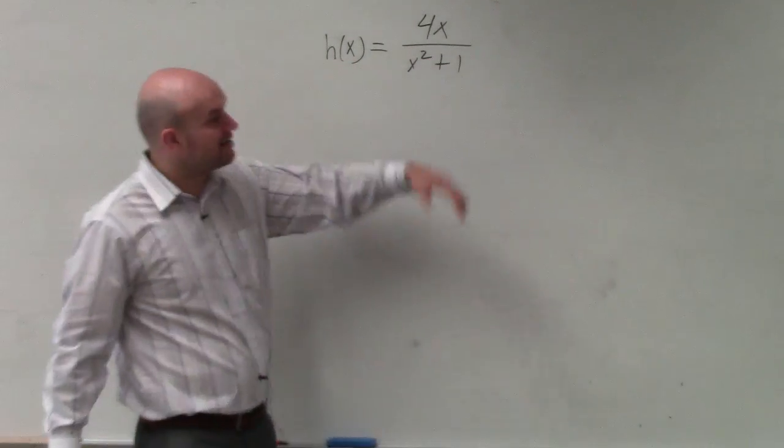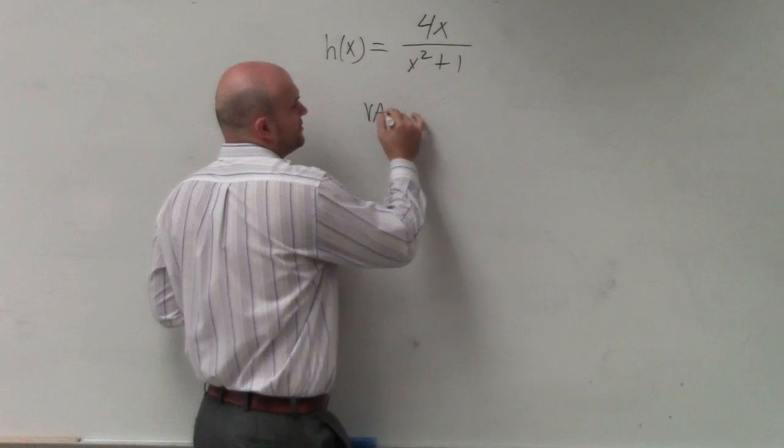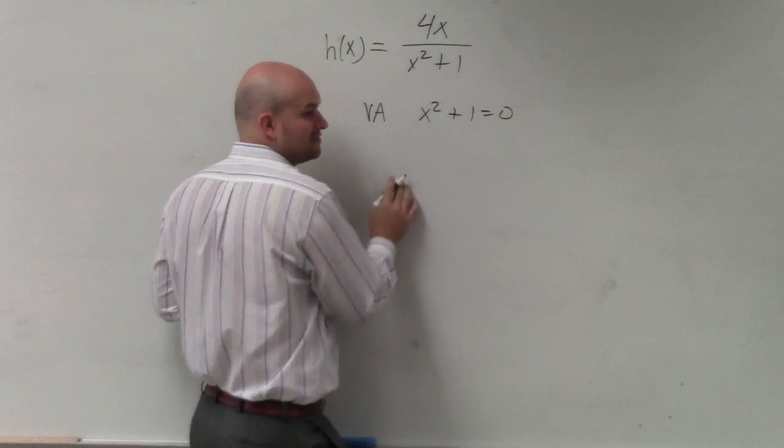And we can't remove them. Fortunately, in this problem, there's nothing we can factor. So my vertical asymptote is going to be when my denominator equals zero, for all the values that make my denominator equal to zero.